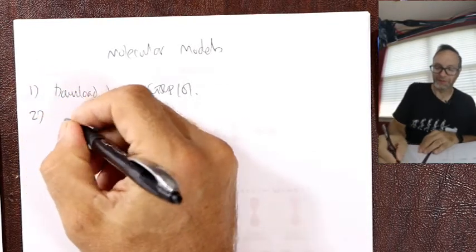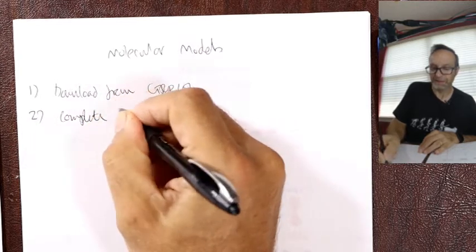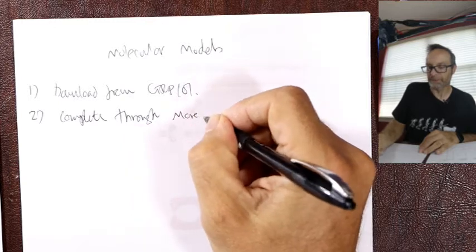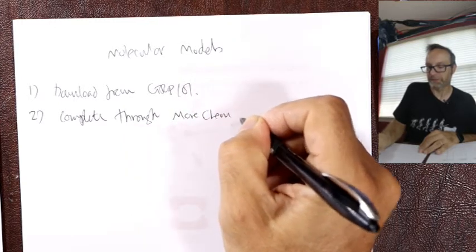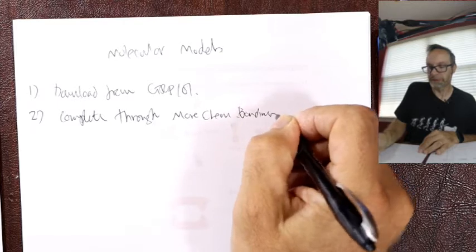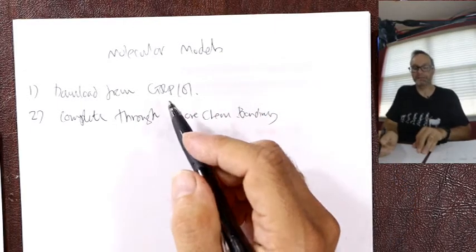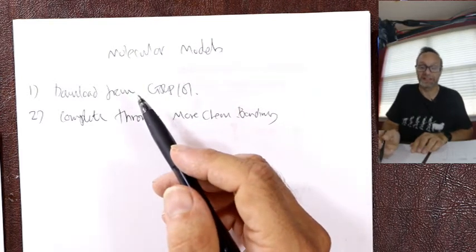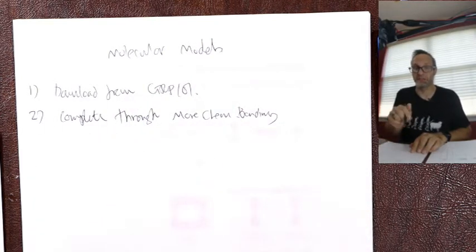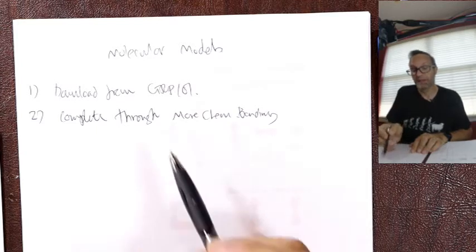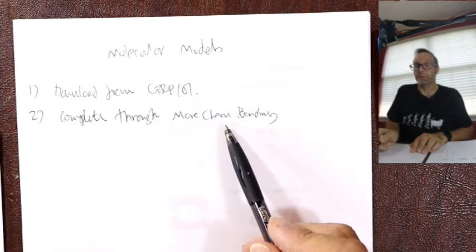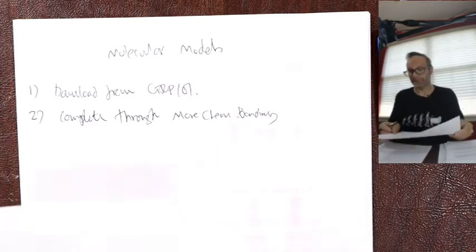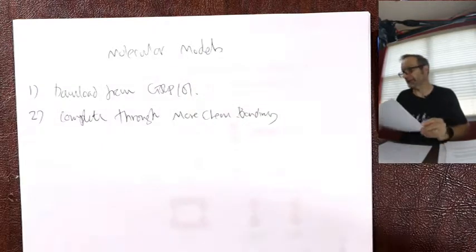So checklist number two is complete through more chemical bonding. Download the packet, print it out if you can. I'm not sure if it's editable or not. But to be honest, you should probably print it if you can, because you've got to be able to draw structures.